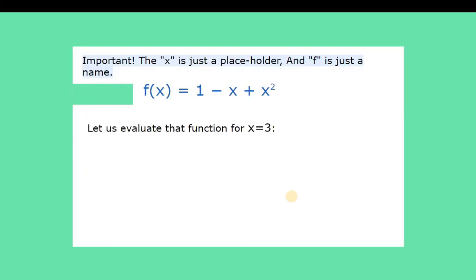Let's be reminded that x is just the placeholder, and f is just the name. You can replace x anytime with any number that is given, and f can be interchanged by different letters. So let's try to look at this function: f(x) equals 1 plus negative x plus x squared. And what if the function for x equals 3? So we will replace x with 3.